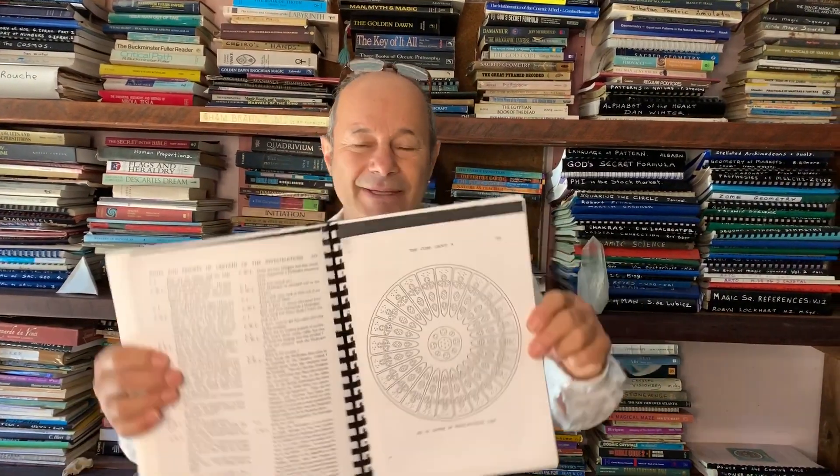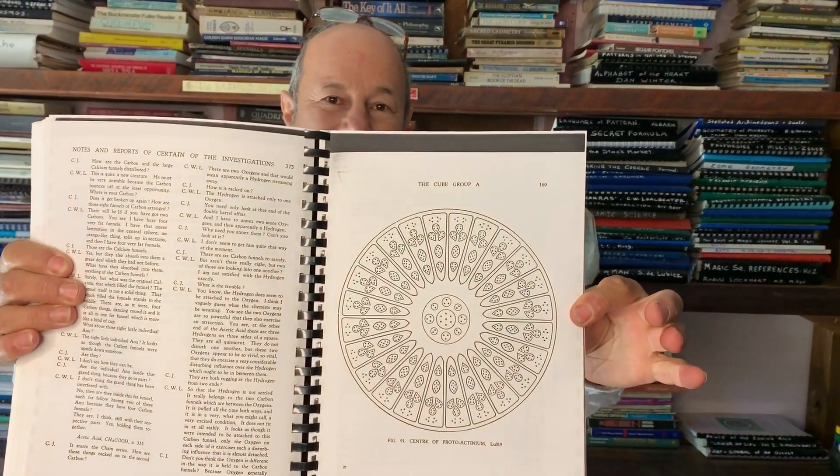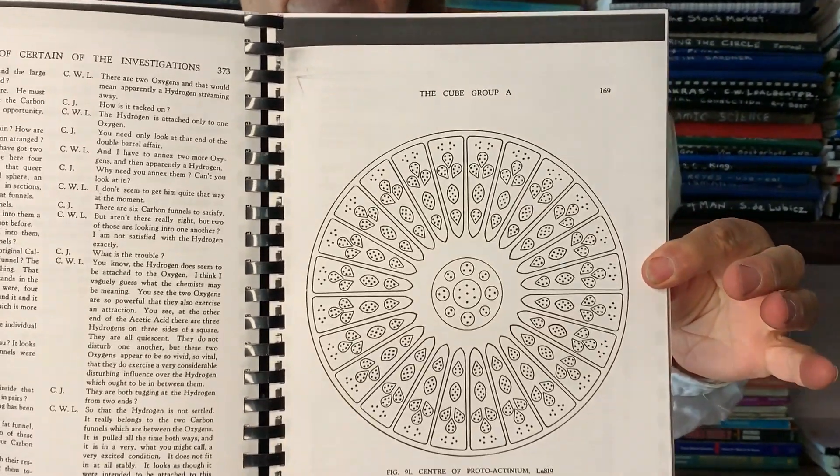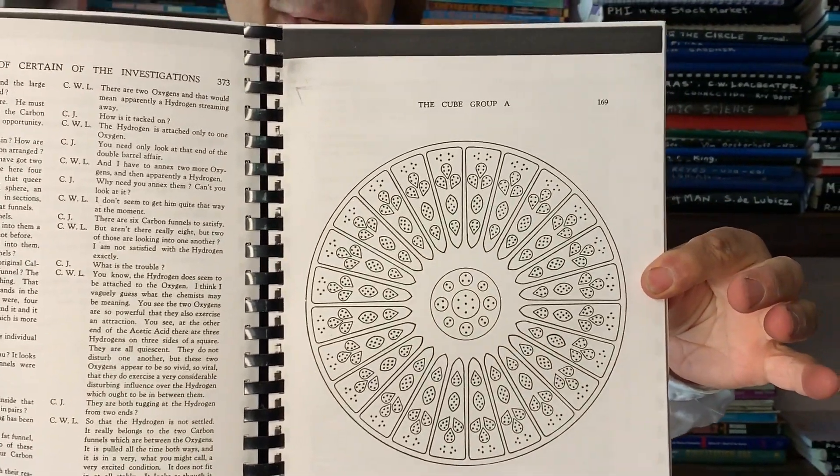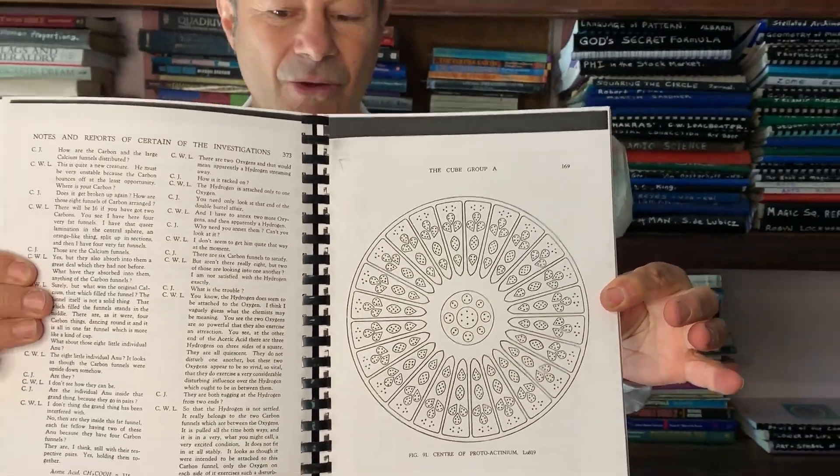You're looking at all the five platonic solids there. And so when he looked at an element, say, this is called actinium. So we're looking at the mandala, the atomic structure of actinium, one of the elements on the periodic table, perceived through what he called micro-psi. Micro-psi means he could see the invisible world. He made visible the invisible.